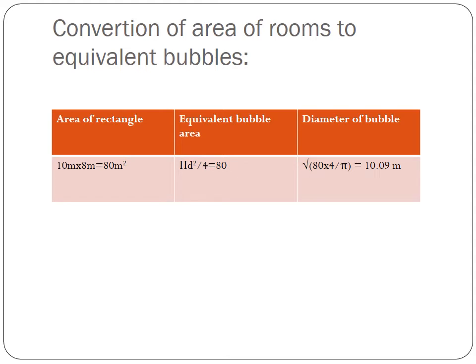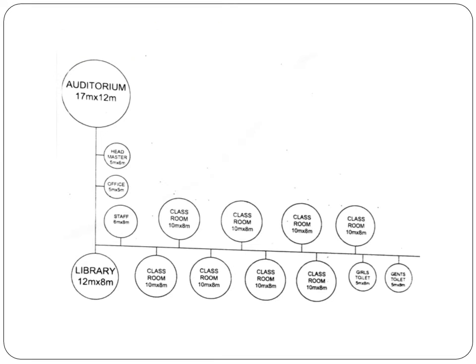The same line diagram can be converted to a bubble diagram drawn to scale. To calculate the rectangular area to equivalent bubble area: for example, taking classroom area as 10 by 8 meters equals 80 square meters, the equivalent bubble area uses the formula pi times d-squared divided by 4 equals 80, giving a diameter of 10.09 meters. Using this diameter you can draw the bubbles to indicate the difference in sizes between different rooms using connectivity. The corridor is indicated with a line showing connectivity to different rooms across zone one and zone two.